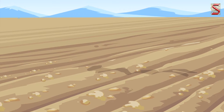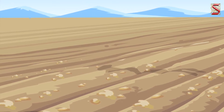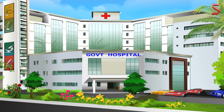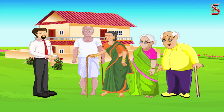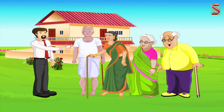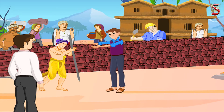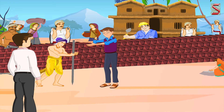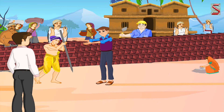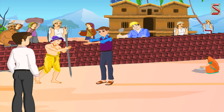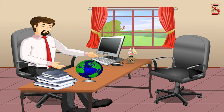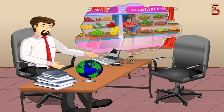He also has to deal with disputes arising out of land records and management of public lands and properties. Third, ensuring the proper disbursement of old age pension, widows' pension, stipends to physically handicapped persons, workmen's compensation matters, and rehabilitation of displaced persons or those affected by a natural calamity. Fourth, the DM also looks after the control, regulation and distribution of food and civil supplies and essential commodities.